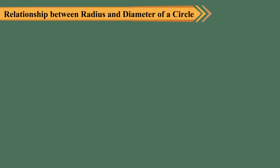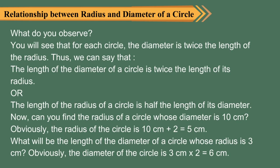Relationship between radius and diameter of a circle: what do you observe? You will see that for each circle the diameter is twice the length of the radius. Thus, the length of the diameter of a circle is twice the length of its radius, or the length of the radius is half the length of its diameter. For example, the radius of a circle whose diameter is 10 cm is 10 ÷ 2 = 5 cm.